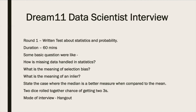For the first round, it was a written test with questions on probability and statistics. The duration was around 60 minutes. Some of the questions asked were: how do you handle missing data in statistics? What do you mean by selection bias? Give an example of an inlier and an outlier. For the probability section, they asked: if two dice are rolled together, what is the probability of getting two threes? The overall difficulty was not too hard — pretty basic questions. The mode of interview was Hangout. Basically, they wanted to check if we know the basics of data handling.